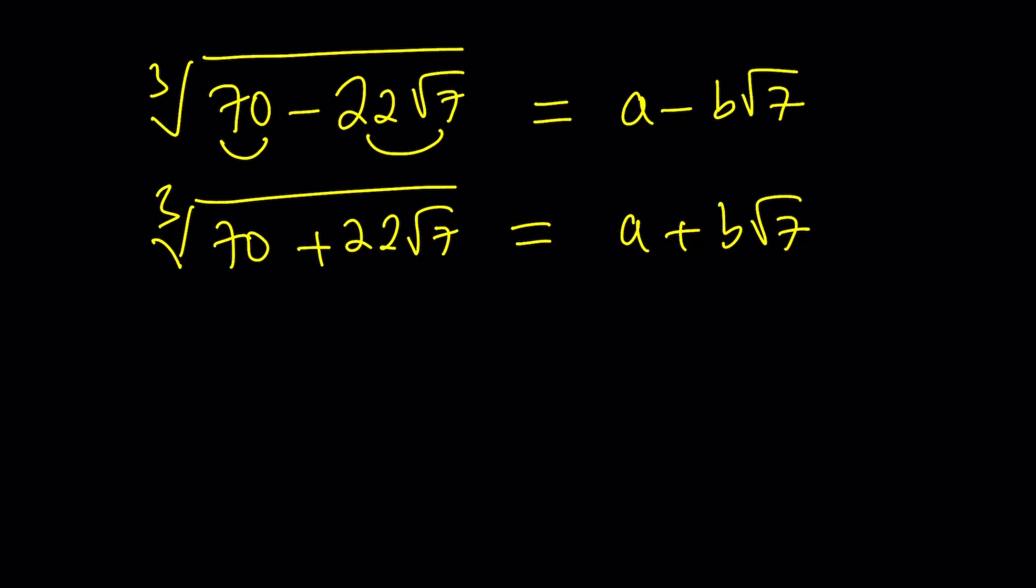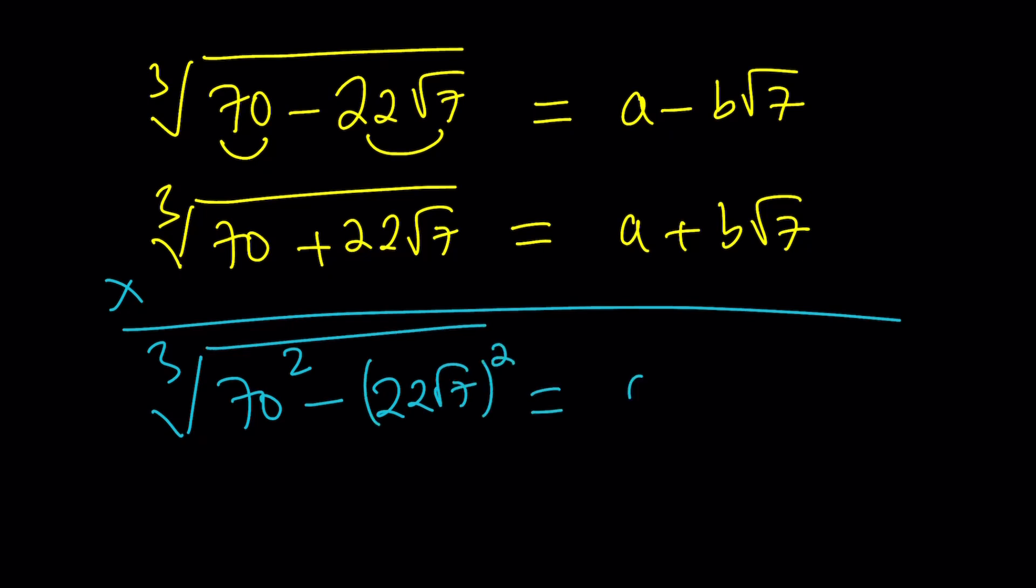And then there's an obvious reason for this. You can use the binomial theorem. But after multiplying these two things side by side, we're going to get the cube root of 70 squared minus 22 root 7 squared, which is 22 squared times 7, is supposed to equal a squared minus 7b squared. Now, here's the thing. If this could be denested, then you do want this number, because a and b are rational, so this is going to be rational too. You want this to be the cube of a rational number.